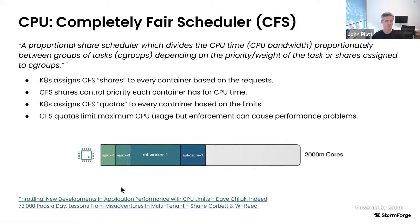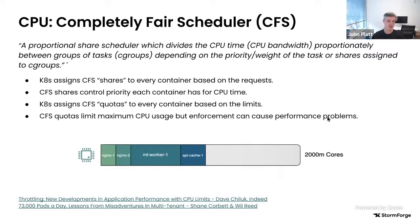Both talks referenced are from KubeCons and go into all the gory details. The first version of Kubernetes started with cgroup v1. The specific performance issues are a cgroup v1 problem. Cgroup v2, I believe, was GA in Kubernetes around version 1.25 or 1.26. The cloud providers are rolling it out. It will be interesting to see if the best practice around CPU limits changes with the migration to cgroup v2.